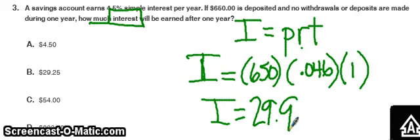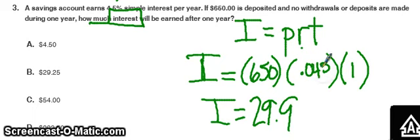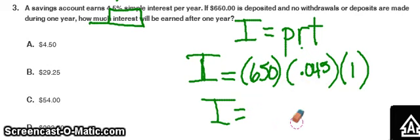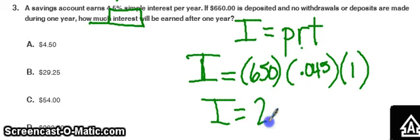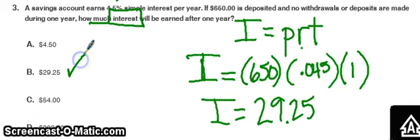I'm wondering — does that say 4.5%? Okay, let's go back and try using 4.5% there. Since I didn't come up with any answer choices before, let's try 650 times 0.045 times 1. There we go — that is 29.25, which would be answer choice B.